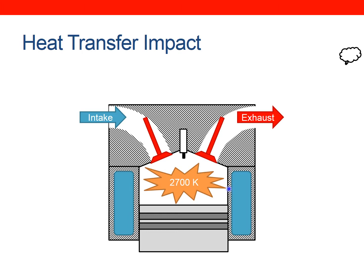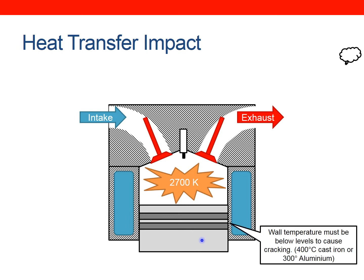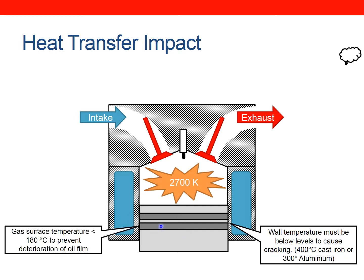So we need to remove that heat — but not too much, because if we remove too much we have a detrimental effect on power, since we'd be cooling the gases down and that's less work being done on the piston. We need to keep the wall temperatures below the levels that will cause thermal stress and cracking — that's around 300 to 400 degrees Celsius for cast iron and aluminium respectively. We also need to keep the temperature of the oil film between the piston and the cylinder below around 180 degrees, because any higher and the oil starts to break down and won't lubricate the piston properly.